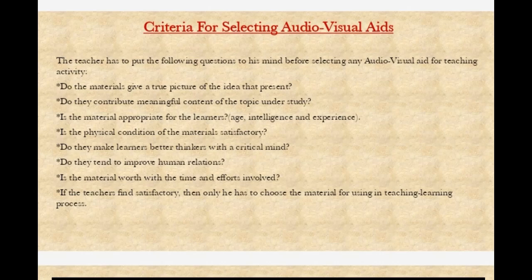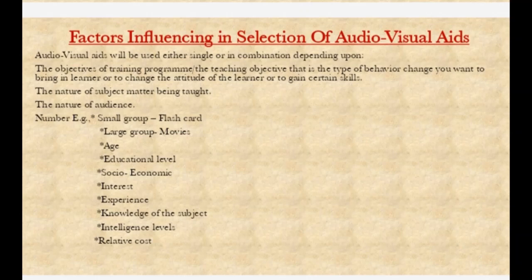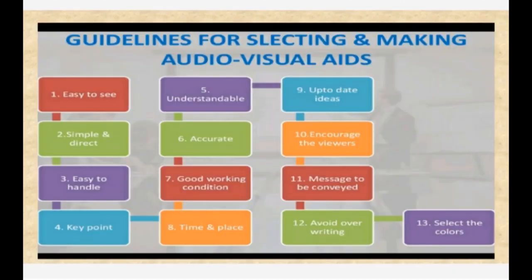What are the factors influencing the selection of audio-visual aids? The factors are: small group or large group, age, educational level, socio-economic interest, experience, knowledge of the subject, intellectual level, and relative cost.